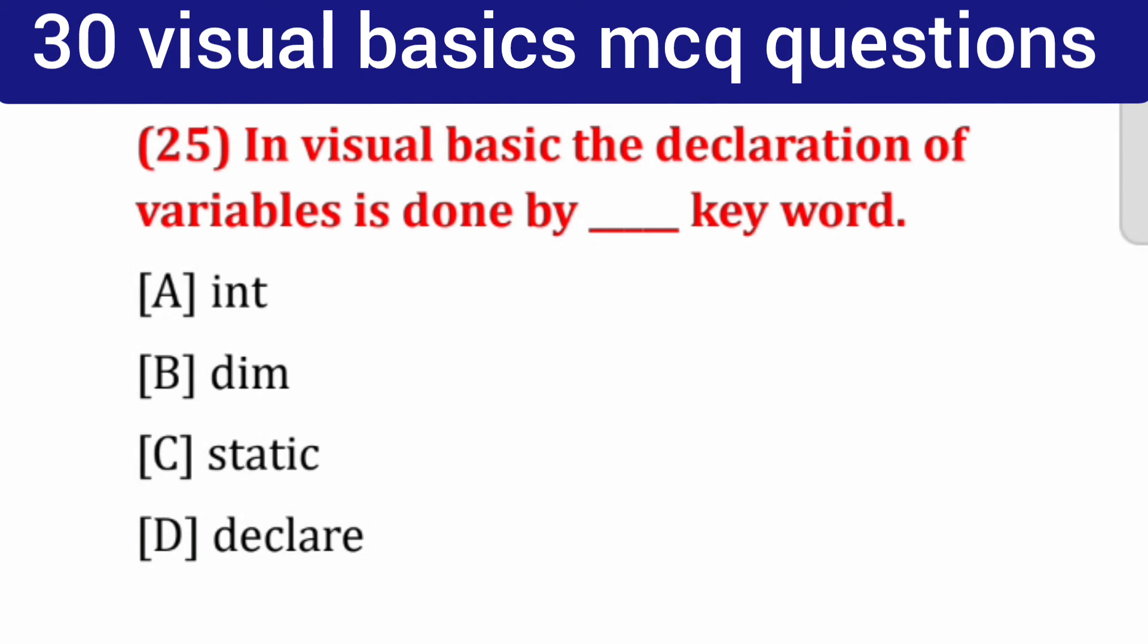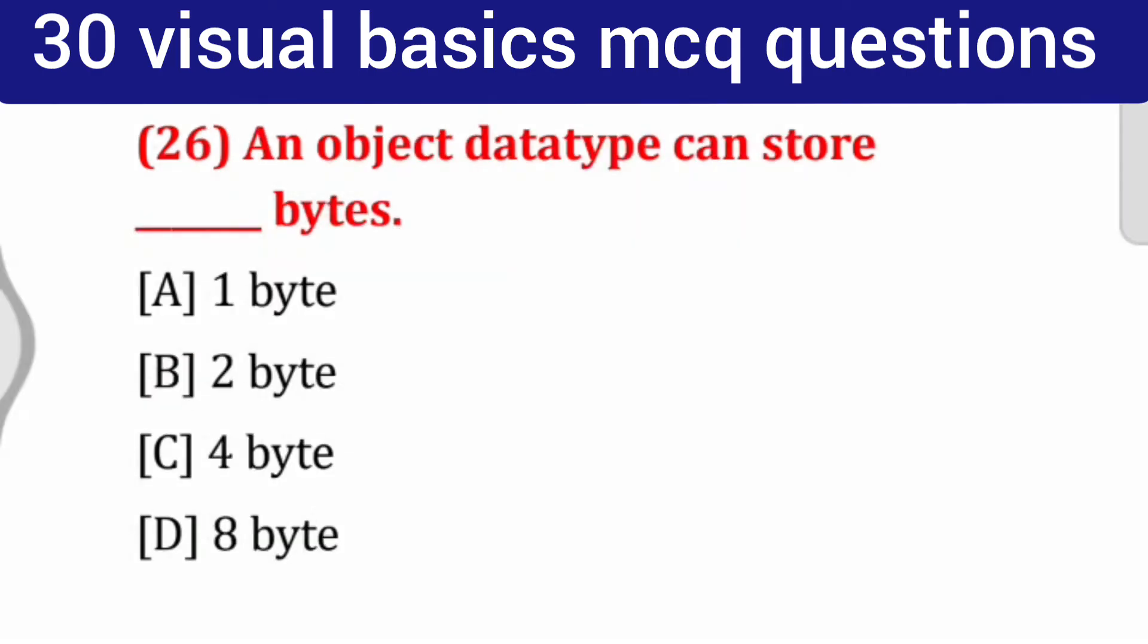Question number 26: An object data type can store ___ bytes. Options: one byte, two byte, four byte, eight byte. Correct answer: four byte.